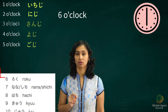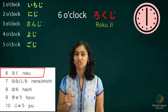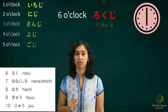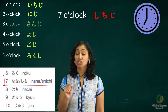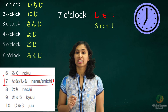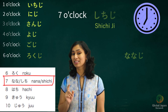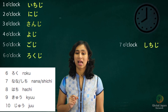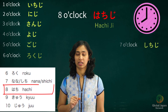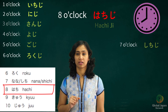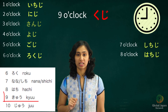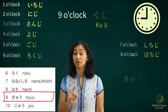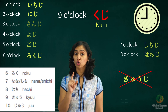Six o'clock: Roku, so Rokuji. Seven o'clock: Shichiji — note it's not Nanaji, it's Shichiji. Eight o'clock: Hachiji. Nine o'clock: Kuji.